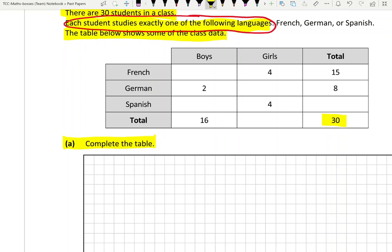Let's start off here. The first piece of data we need to put in is how many boys study French. Now, the number of students that study French is 15, four of them are girls, so the rest must be boys. 15 take away 4 is 11, so I'm going to put 11 here.